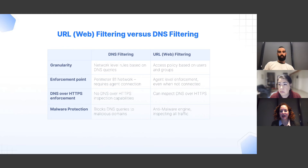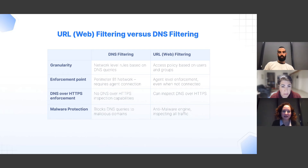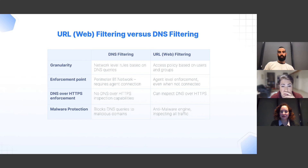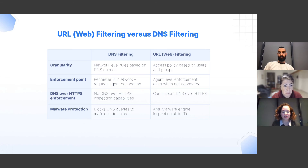The granularity is finer with URL filtering, enabling policy defined on a per-user or group basis. Regarding the enforcement point: DNS filtering requires a network connection — if you are connected to the network, you are routed through the DNS of our system, and that is how policy enforcement is provided. With URL filtering, you have agent-level enforcement; the enforcement is done on the agent itself even if it is not connected to the corporate network, meaning even if employees are using the web at their leisure time, not connected to corporate resources.